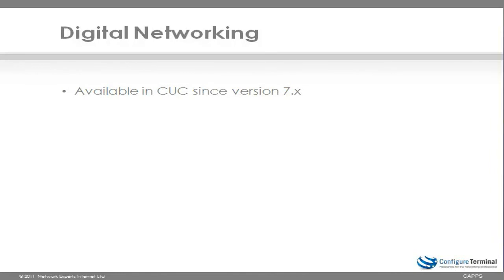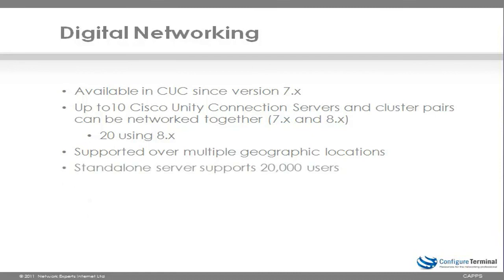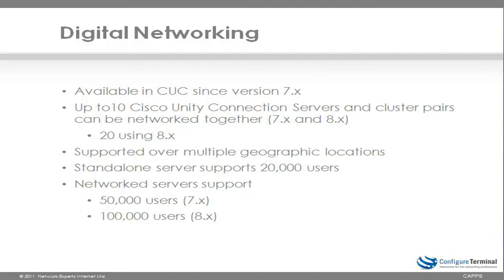Digital networking has been available since version 7 of Cisco Unity Connection. Up to 10 servers can be digitally networked when using version 7, or up to 20 locations when using version 8. This is supported over multiple geographic locations, so the servers don't have to be physically located at the same site. A standalone server supports up to 20,000 users, but digitally networked servers can support up to 50,000 users when using version 7.x of Cisco Unity Connection, or up to 100,000 users when using version 8.x of Cisco Unity Connection.